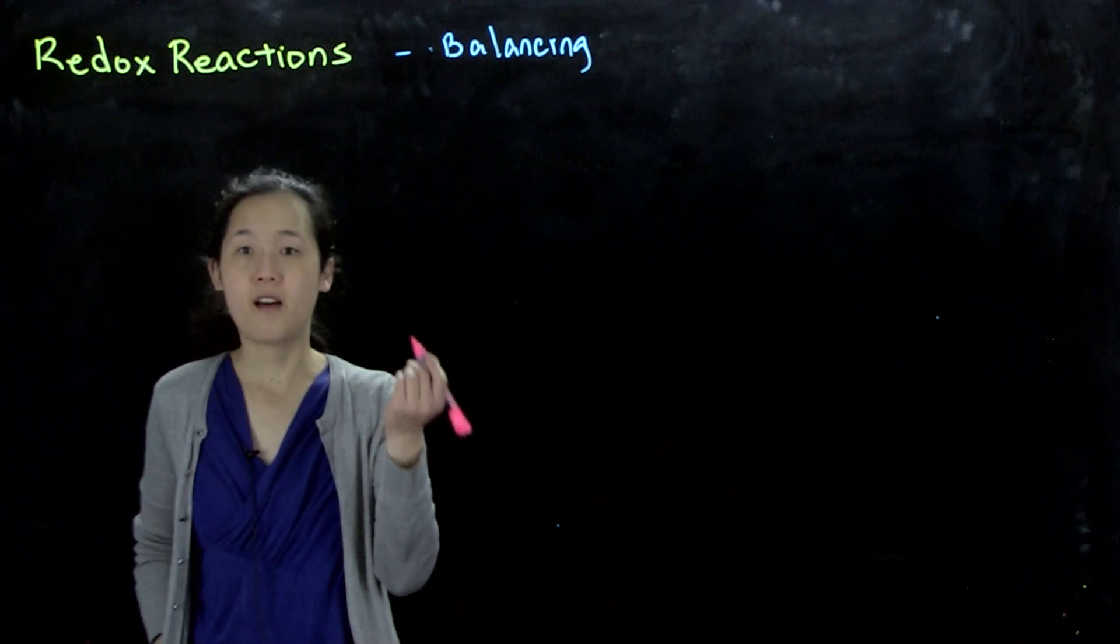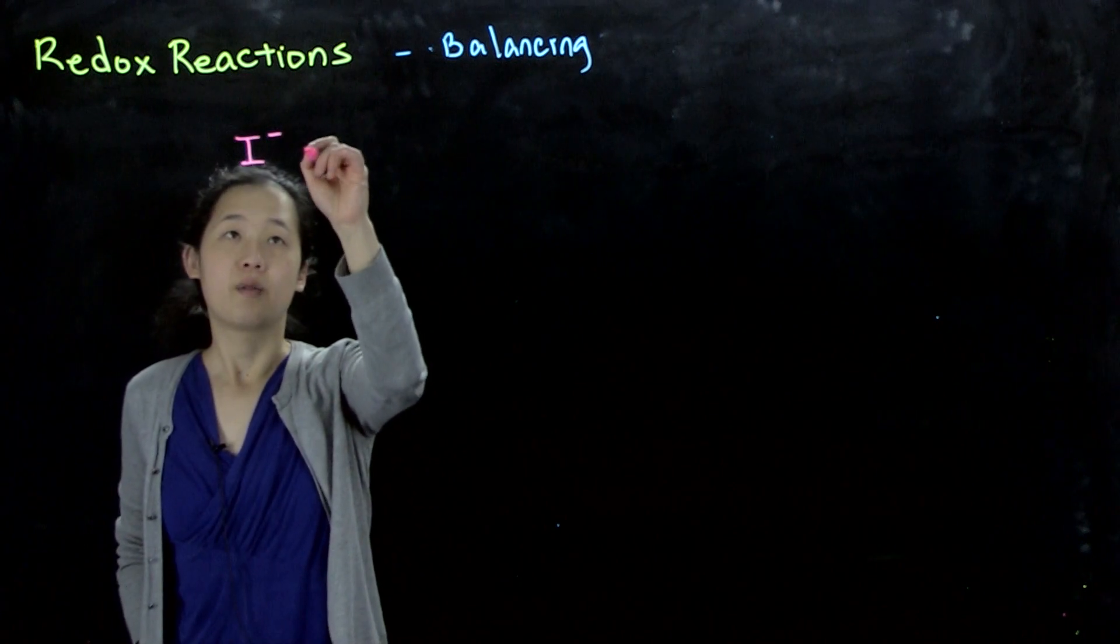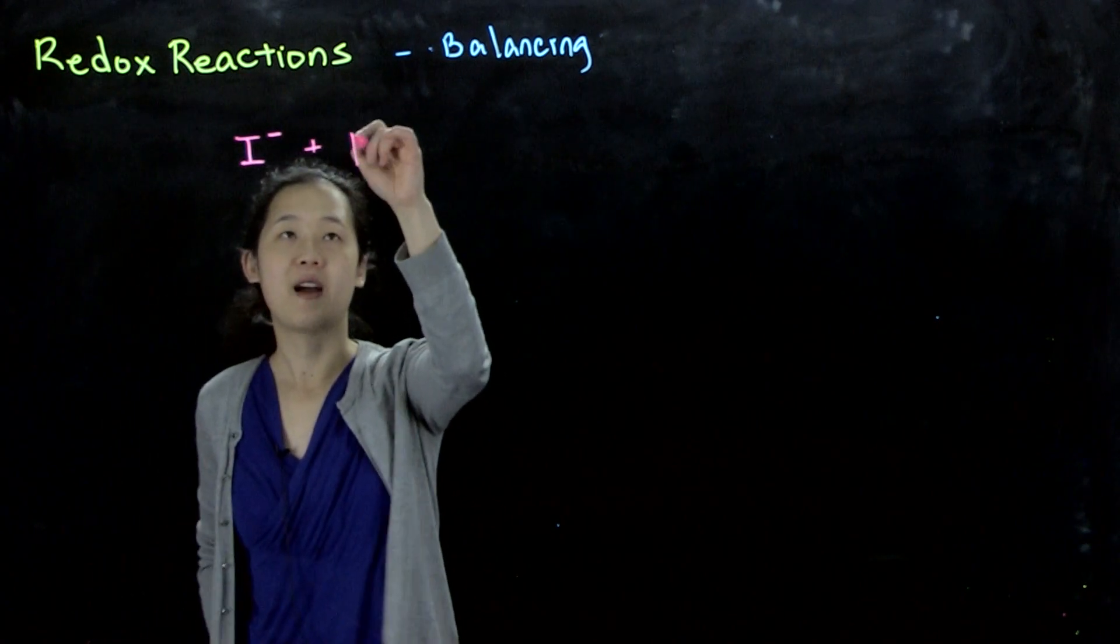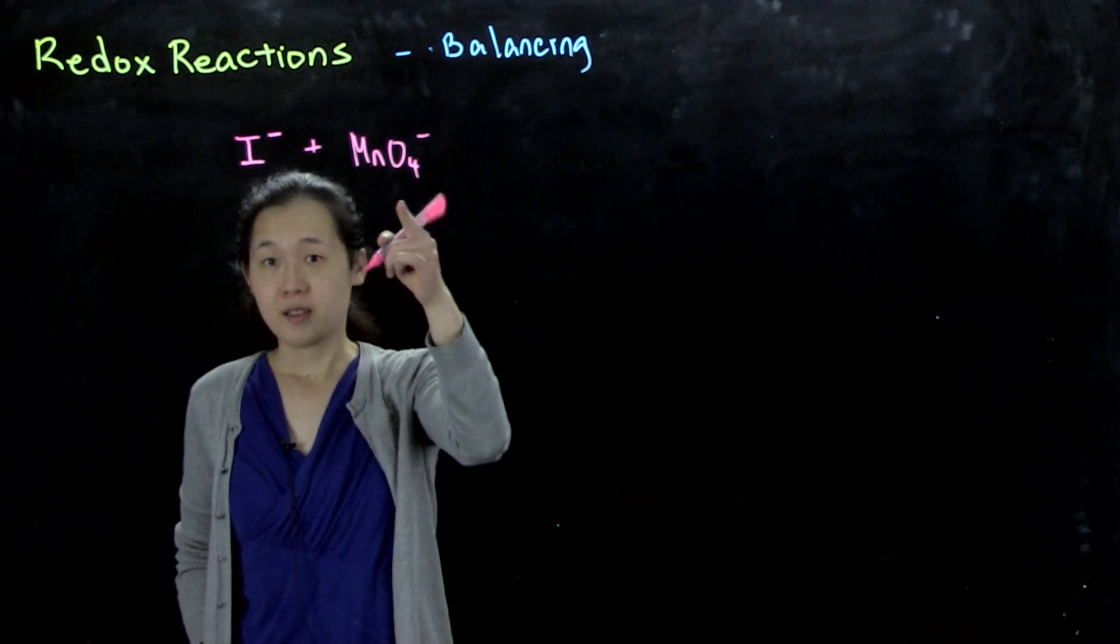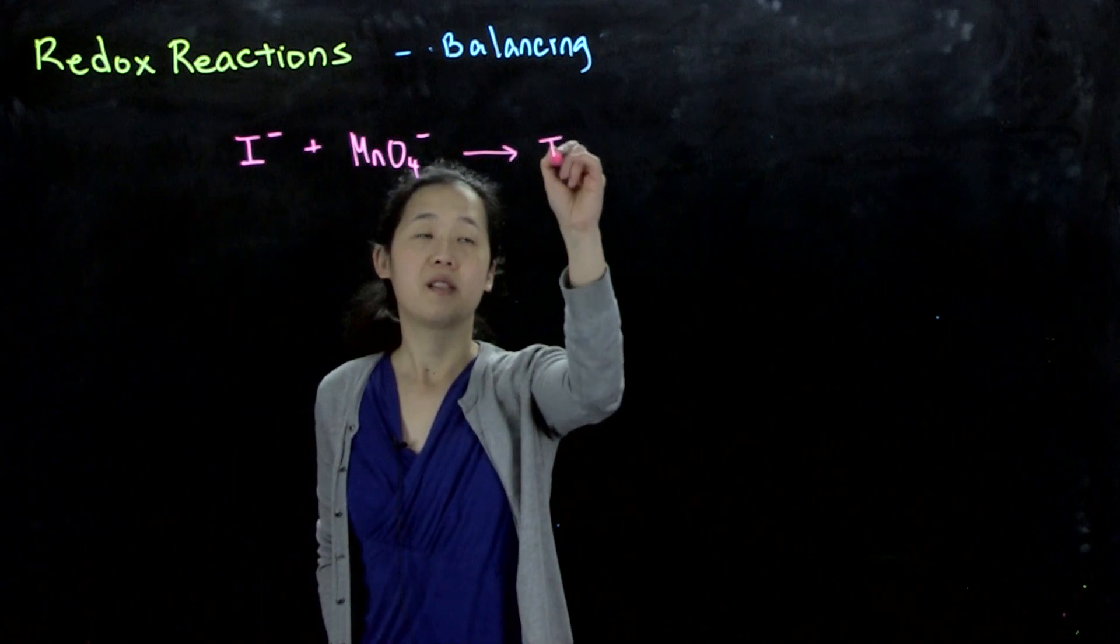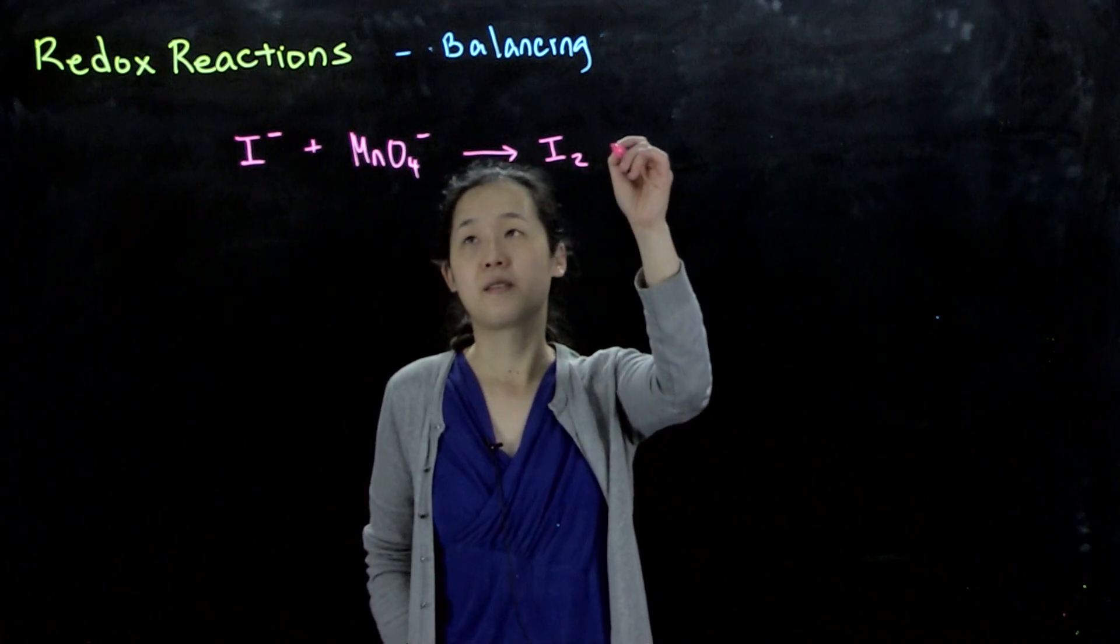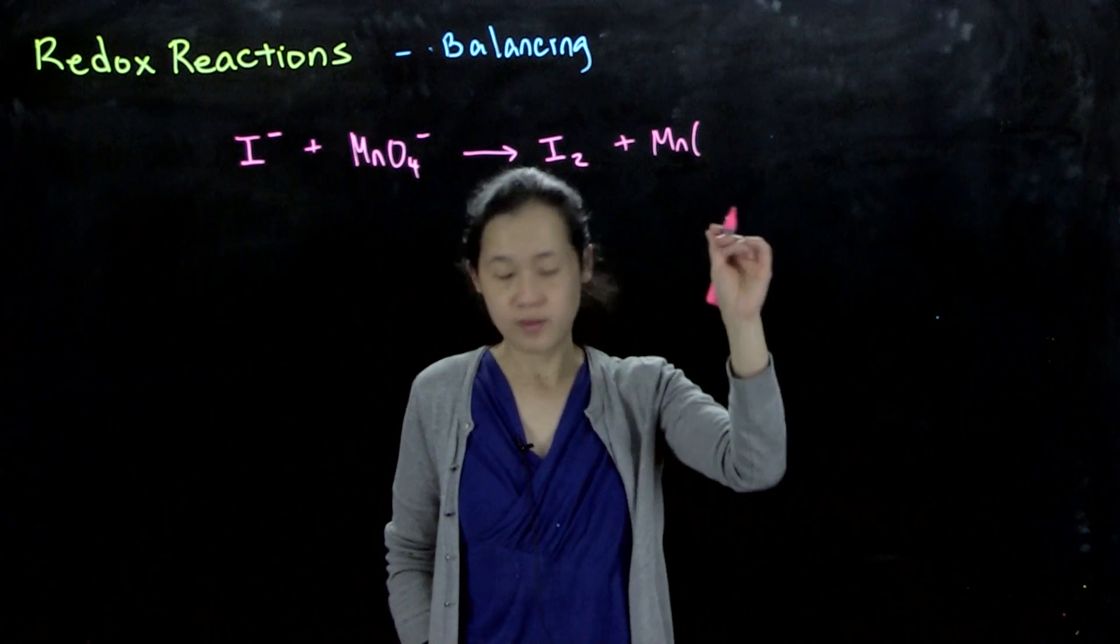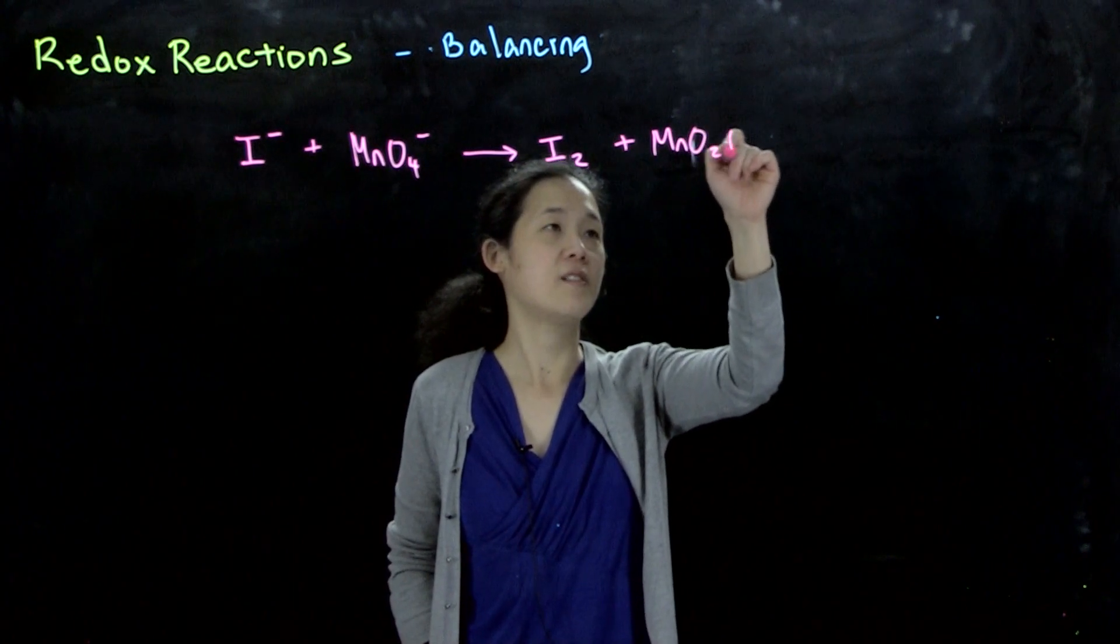Suppose I have this reaction. Iodide (I⁻) aqueous reacts with permanganate (MnO₄⁻), so we know manganese is 7+ in permanganate, and then it forms I₂, which is a solid or could be in solution too, and manganese oxide (MnO₂).